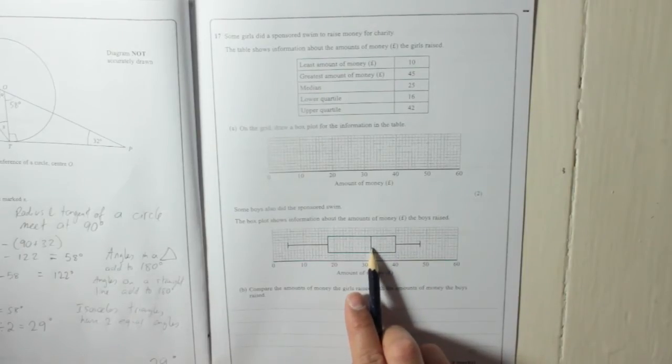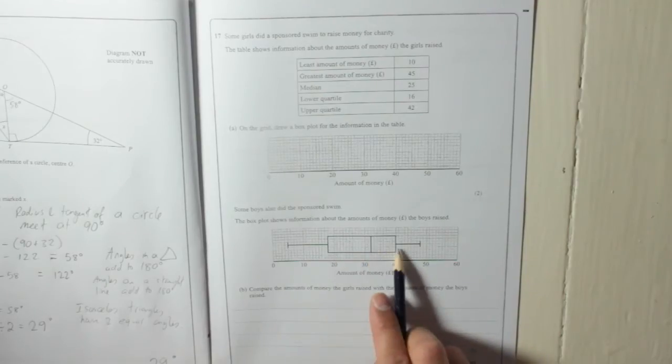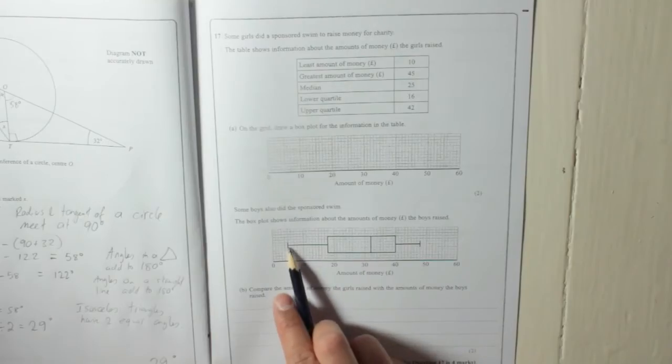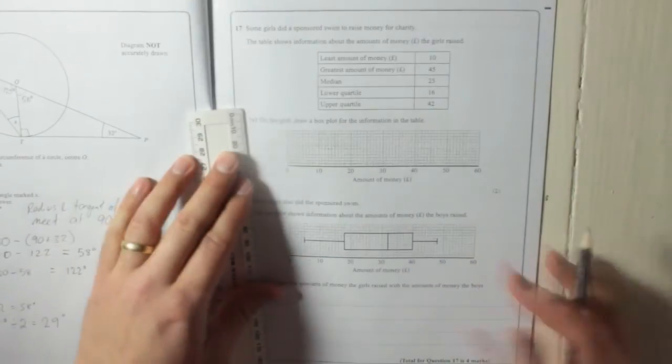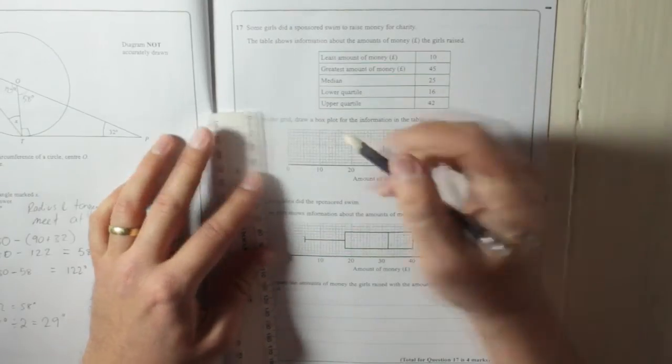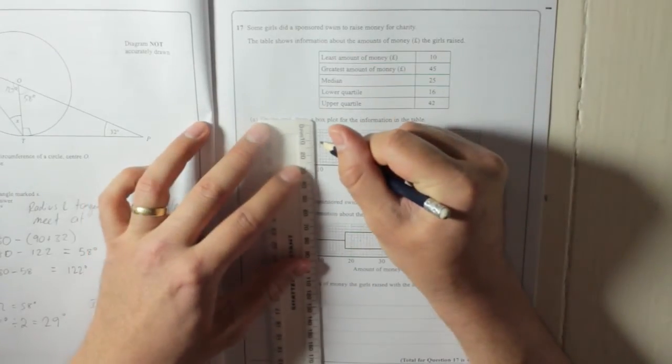The interquartile range is the difference, the distance between the lower quartile and the upper quartile. And the range is the distance between the lowest and the highest. So, least amount of money was 10. So, put it roughly in the middle.